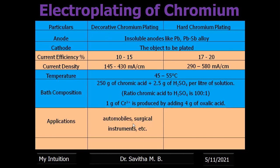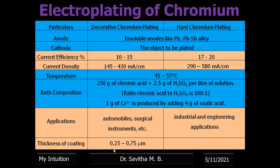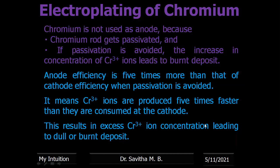Applications: a thin layer of chromium is used in automobiles, surgical instruments, etc. For hard coating, the thickness is more and it is used in industrial and engineering applications. The thickness in decorative coating is 0.25 to 0.75 micrometers, and in hard coating it is higher — 2.5 to 300 micrometers.